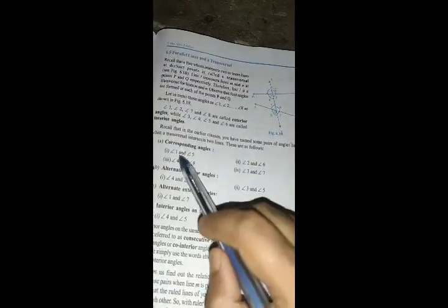We have angles labeled 1, 2, 3, 4, 5, 6, 7, and 8. Angles 1, 2, 7, and 8 are exterior angles.